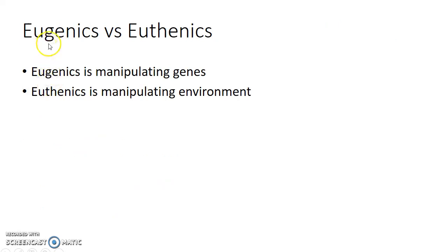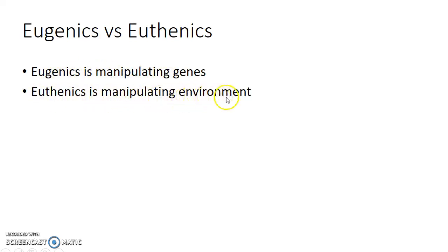Now let us see about the differences between eugenics and euthenics. Eugenics stands for manipulation of genes, whereas euthenics involves manipulating the environment for a specific genotype.